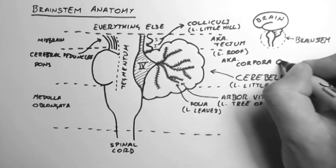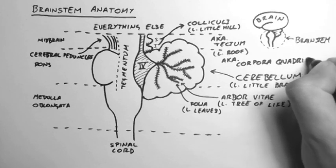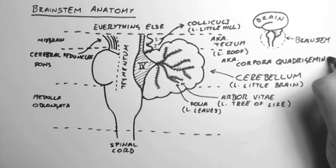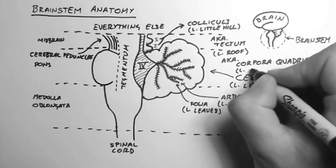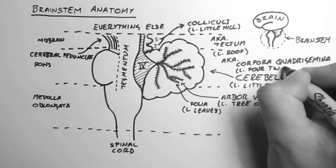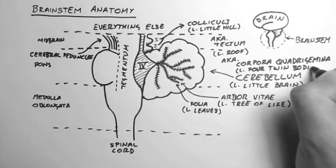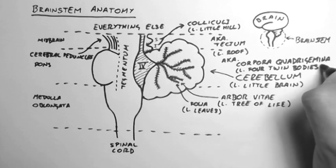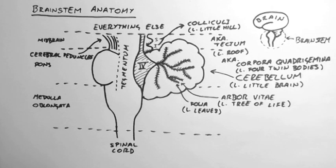Which is Latin for roof. Or they're also known as the corpora quadrigemina. Which is Latin for the four twin bodies. There's actually two of the superior and two of the inferior. One on each side.